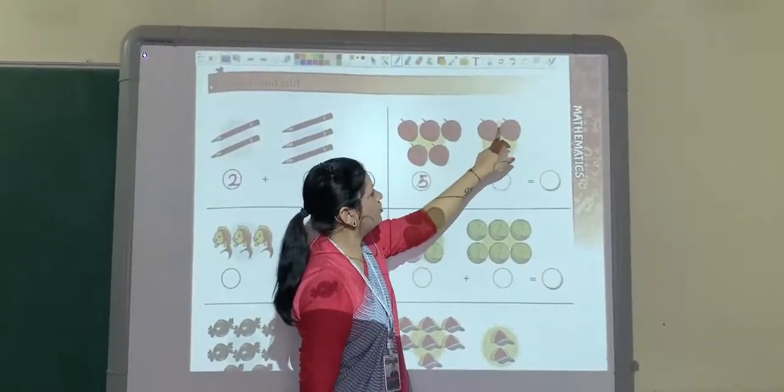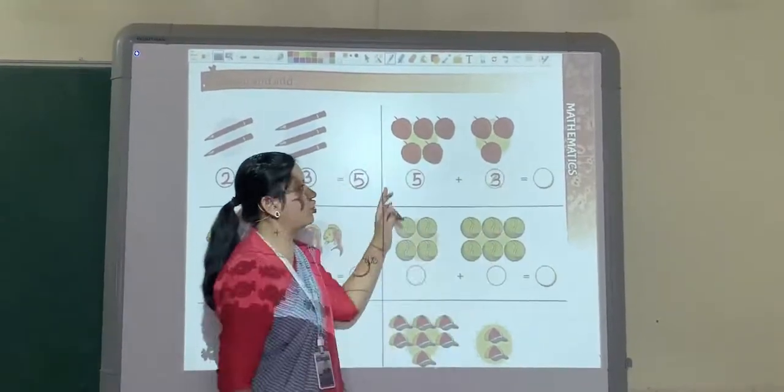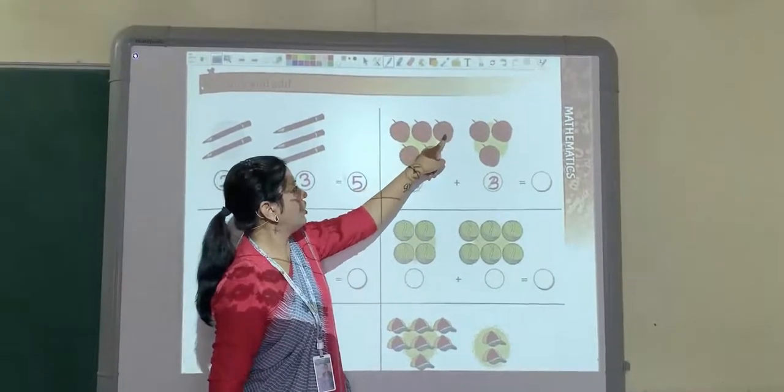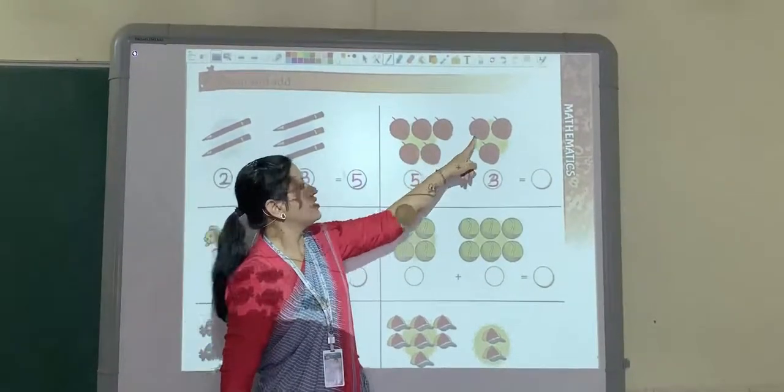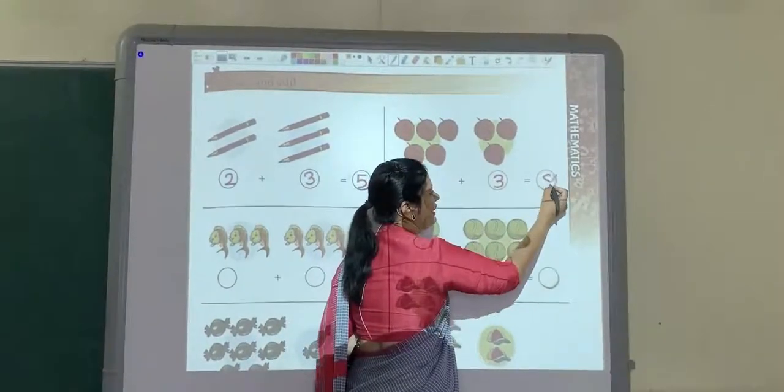And here how many are there? 1, 2, 3. So you will write here number 3. So all together make how many strawberries? 1, 2, 3, 4, 5, 6, 7, 8. So all together make 8.